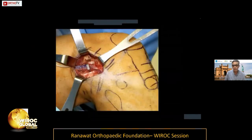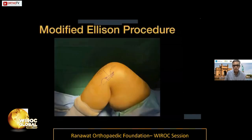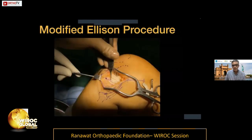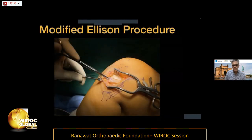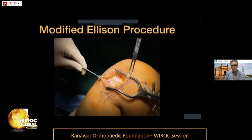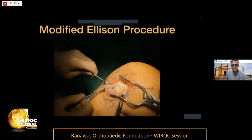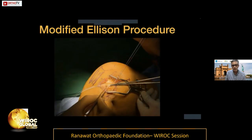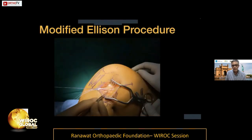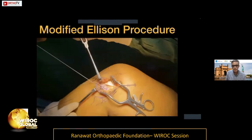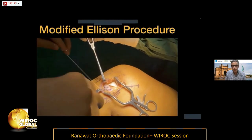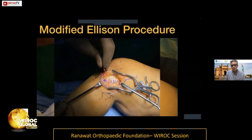The modified Ellison procedure uses the same landmarks. An incision of about 5 cm is made based on Gerdy's tubercle, extended proximally. A strip of the iliotibial band about 8 mm wide is released distally from Gerdy's tubercle and reflected proximally. A 5 mm titanium anchor is placed at the Gerdy's tubercle insertion point. The strip is passed underneath the FCL, tensioned at approximately 60 degrees of knee flexion back to its insertion, and knots are placed to secure fixation, covering the defect with sutures.